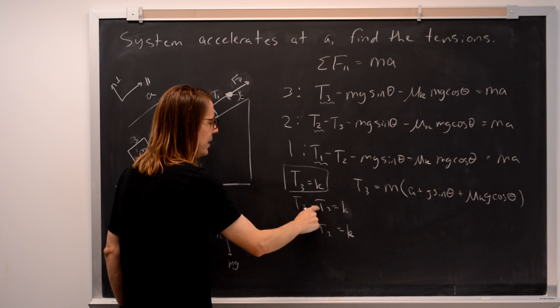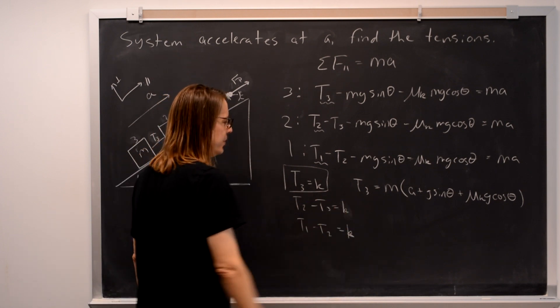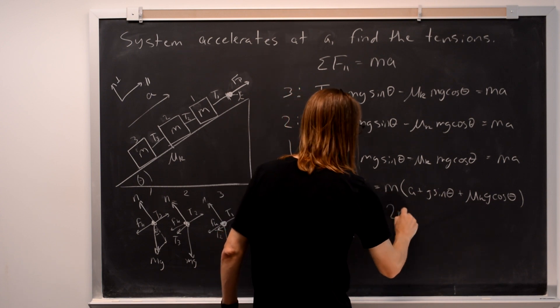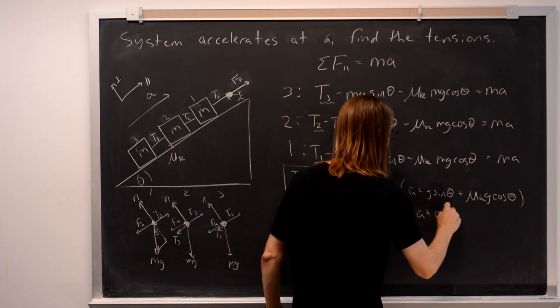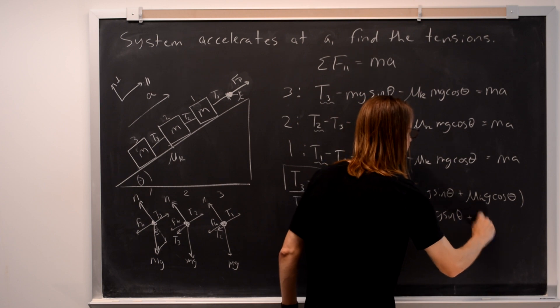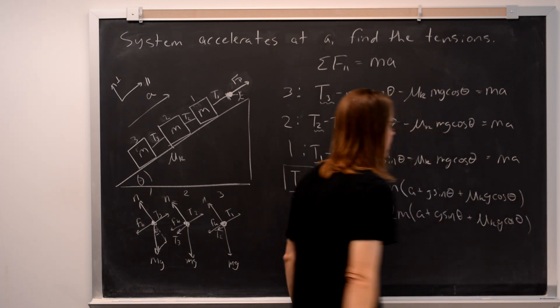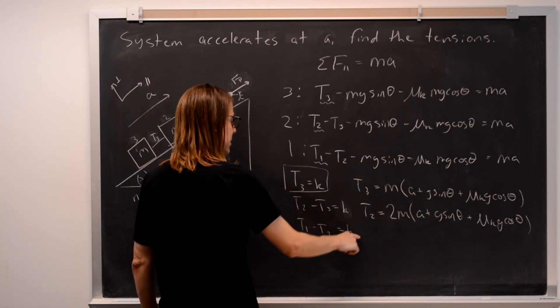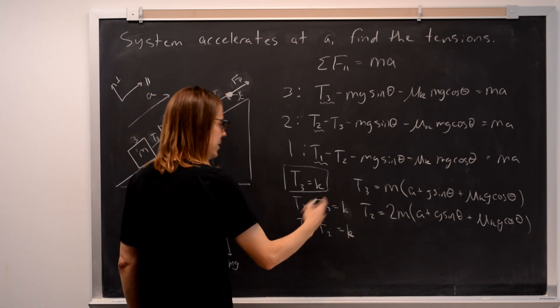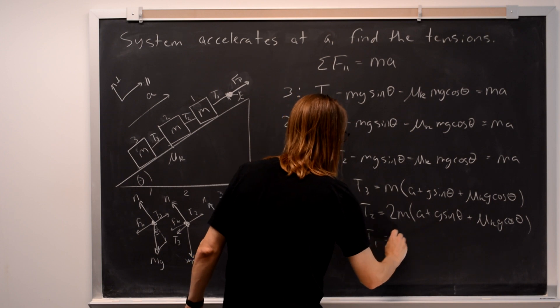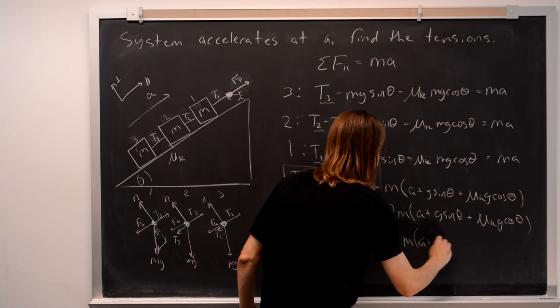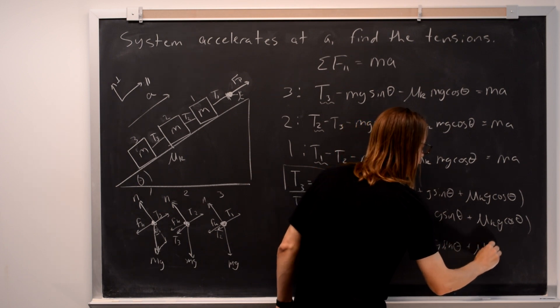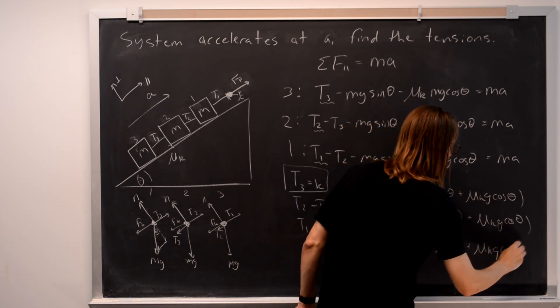If T3 is k, and you pull it over here, then T2 is 2k. So k plus k is 2k. Then T2 is that same thing with a 2 in front of it. 2m times a plus g sine theta plus mu k g cosine theta. And if T2 is 2k, you bring it over here. 2k plus k is 3k. T1 is just 3k. So it's 3m times a plus g sine theta plus mu k g cosine theta.